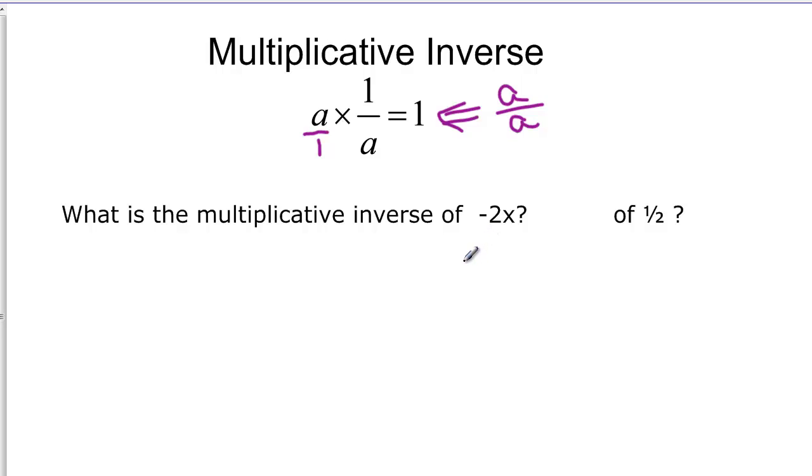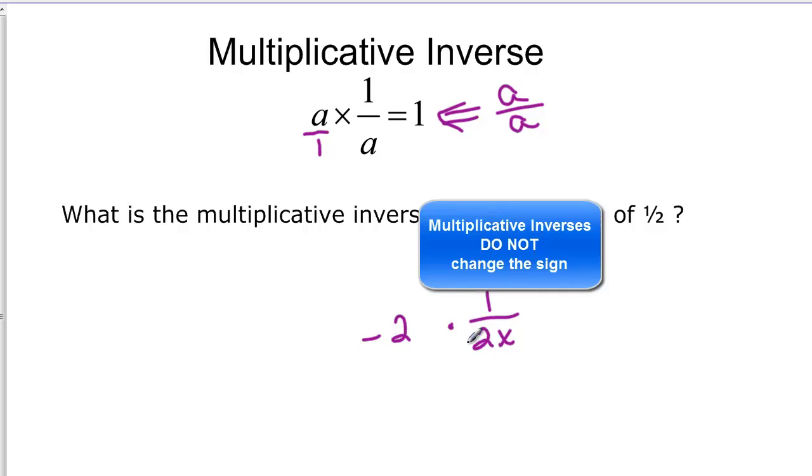So again, let's try negative 2x. What's the multiplicative inverse? Well this is negative 2x over one. So if I flip it over, I'm going to have one over negative 2x. And if I multiply that by negative 2x, you can see that we're going to have negative 2x over negative 2x. And when they're exactly the same, we get 1.